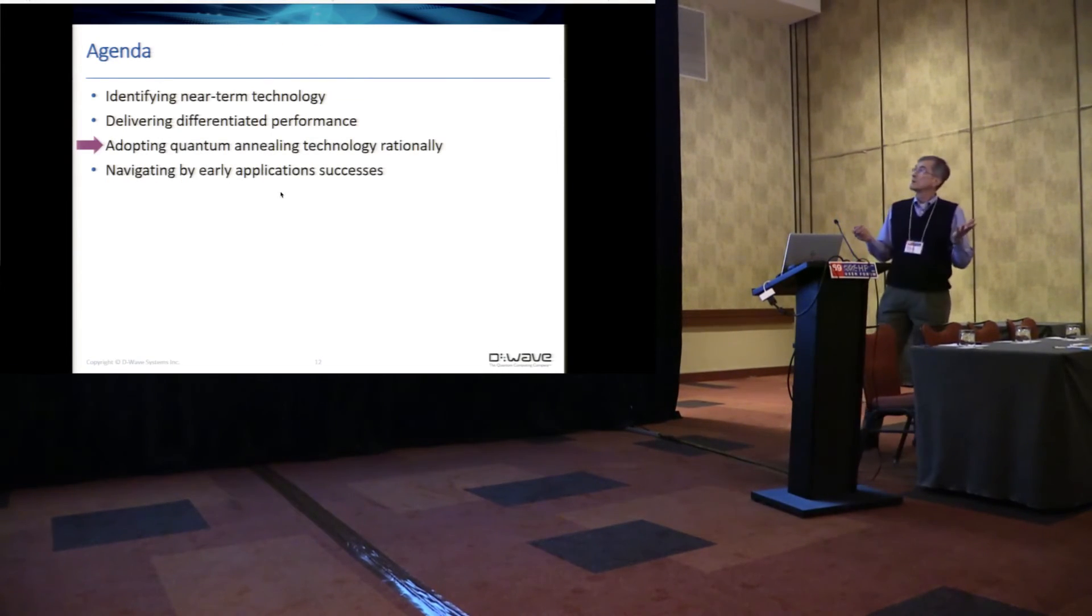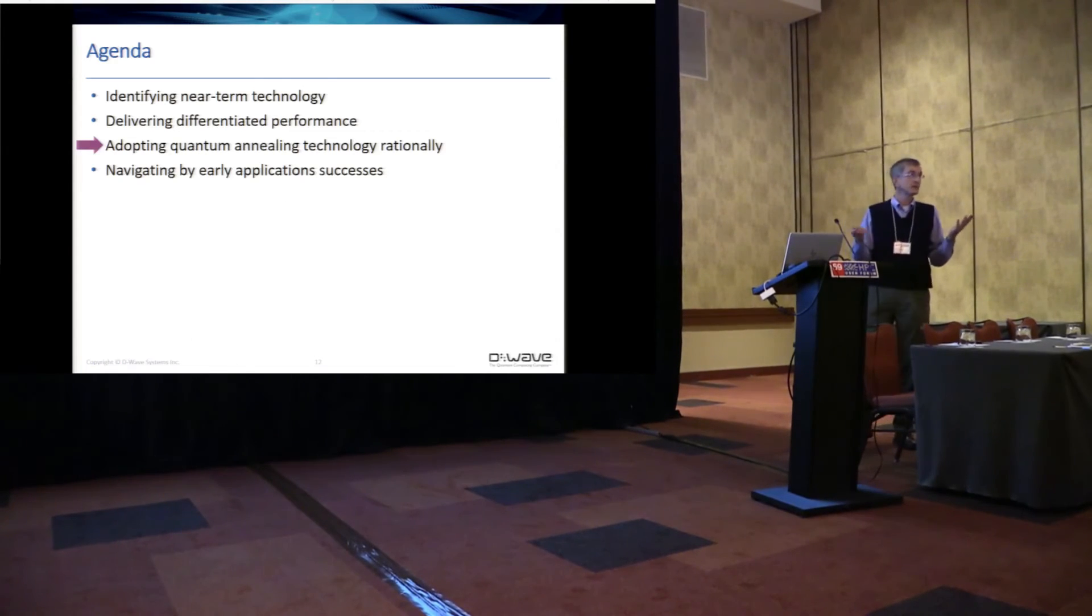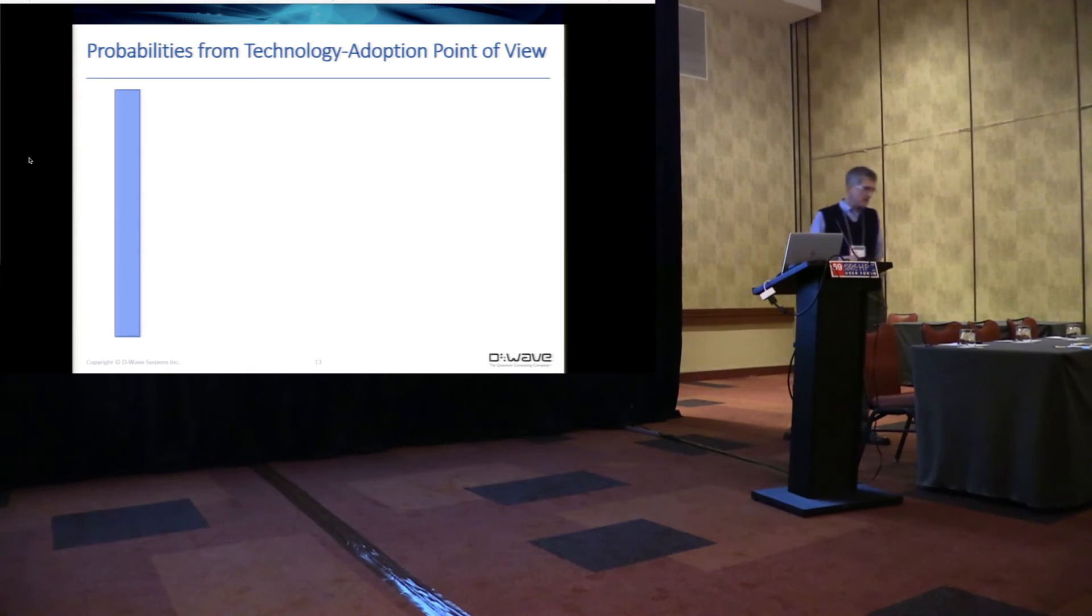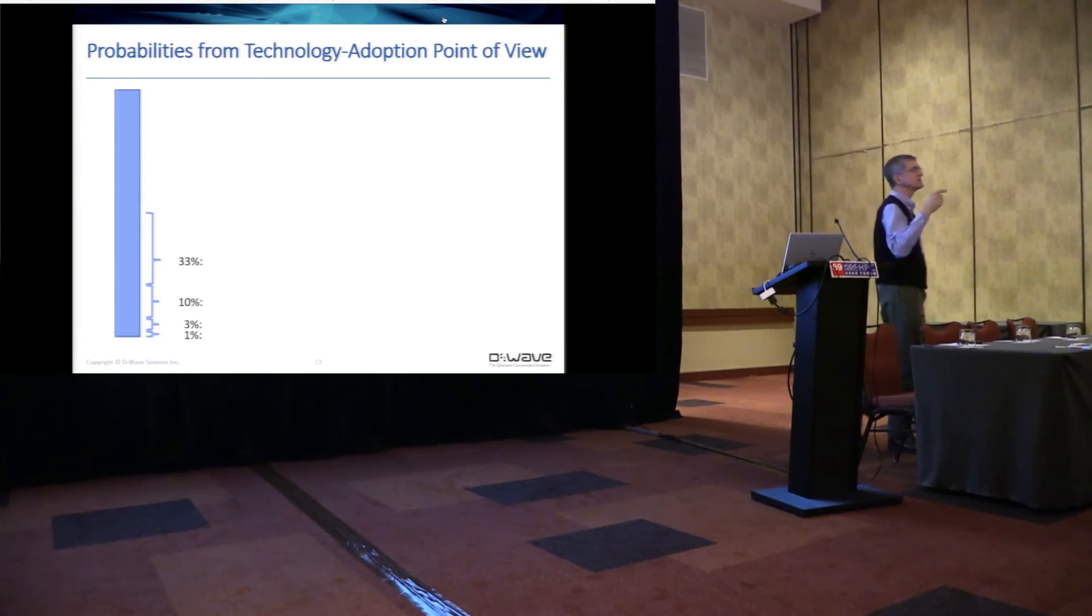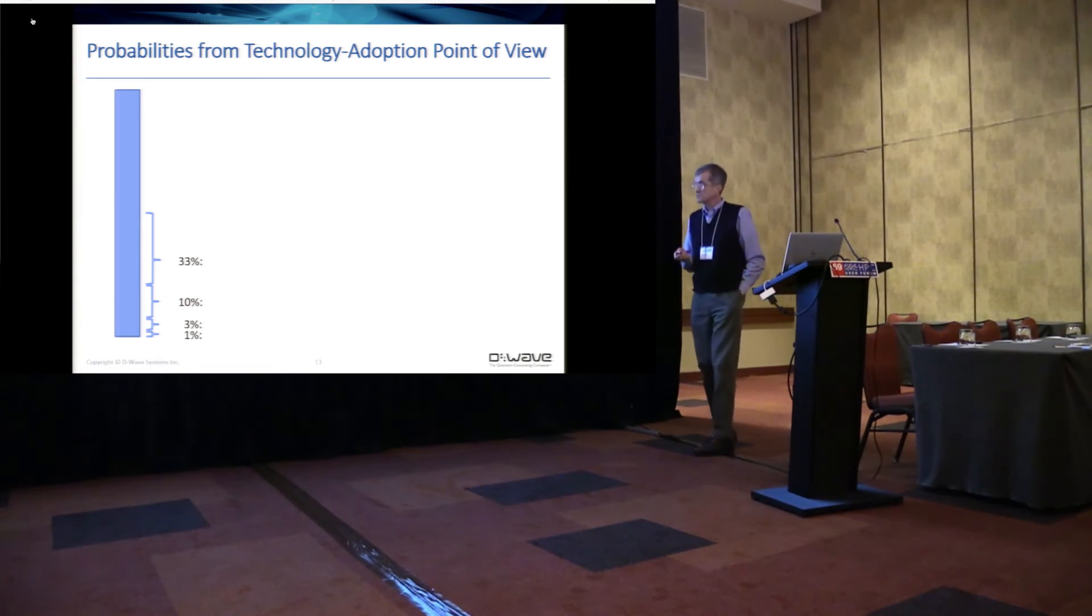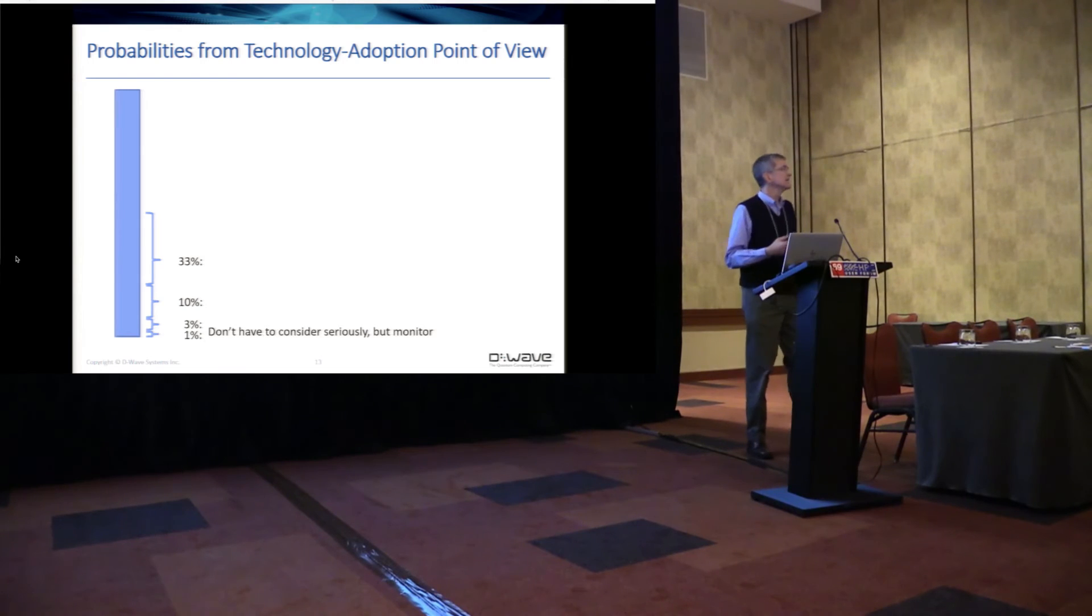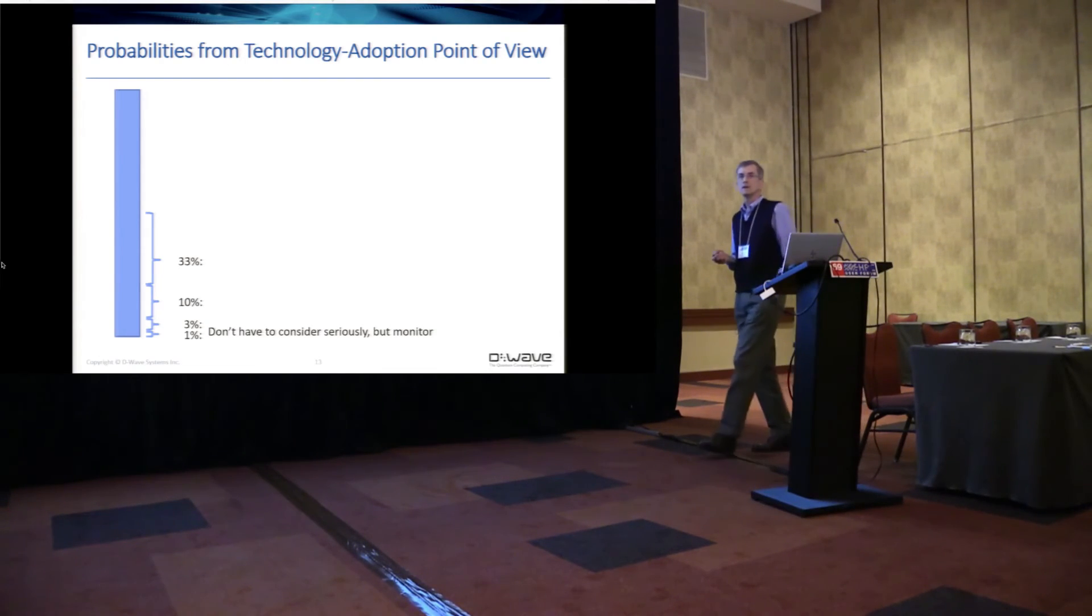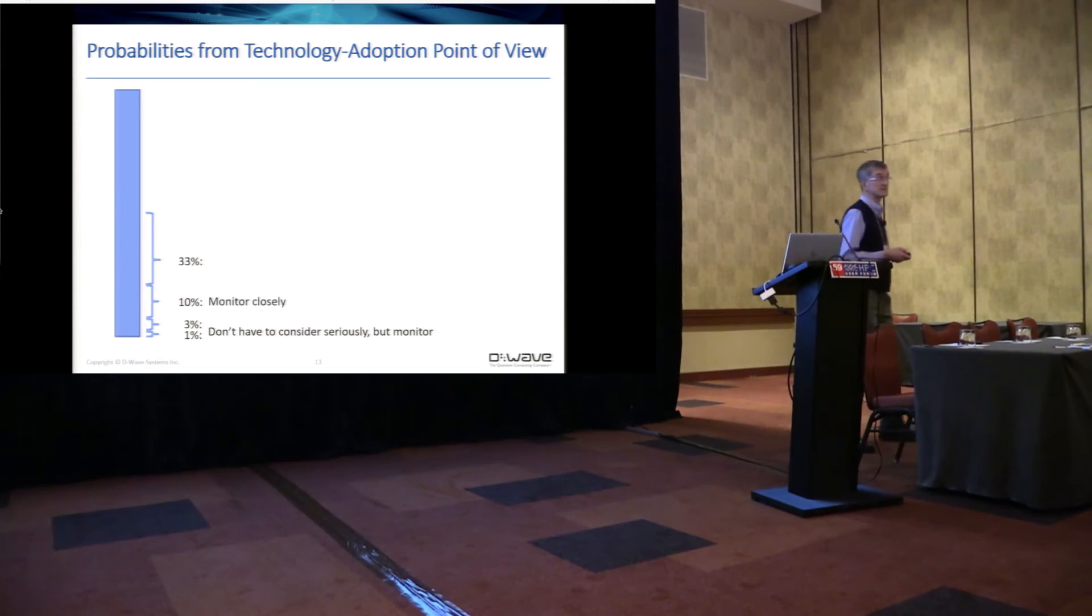Okay. So if I put my project manager hat on and I'm responsible for technology adoption at a major organization, how do I think about adopting this in a reasonable way? So I think about probabilities in maybe an odd way. I think of them as just in orders of magnitude and only half orders of magnitude matter. So if we think of zero to a hundred percent here, one percent and three percent, if something is that likely, do you really spend that much time thinking about it? Probably not. You don't want to be oblivious to it, but you don't want to spend that much time. At 10 percent, you better be thinking about this. You're not spending a ton of time on it, but you need to be monitoring it.